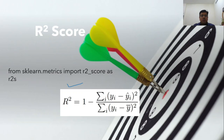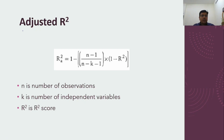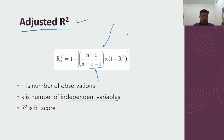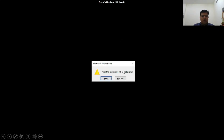One difficulty with R2 square is that it does not account for the number of input features used to build the model. If we have more or fewer features, that is not reflected in R2 square. So there is one more technique called Adjusted R2 square, which takes into account the number of observations and the number of independent features used to build the model. It will penalize if we have more features. Let's go ahead and look at the coding part.